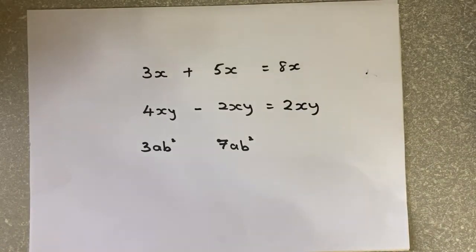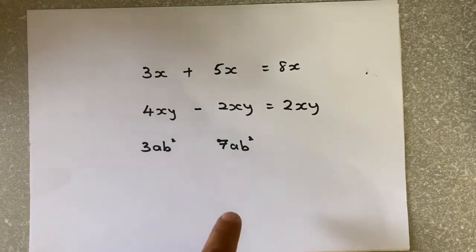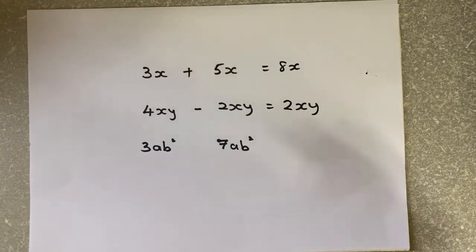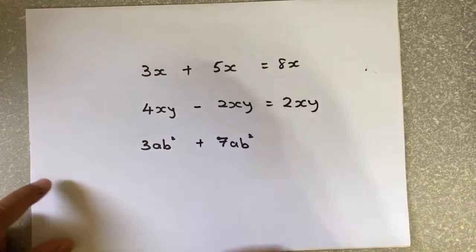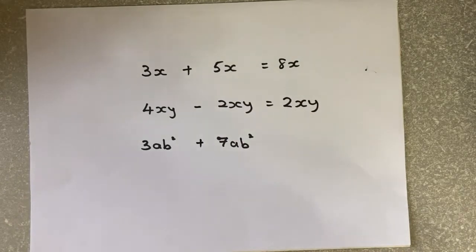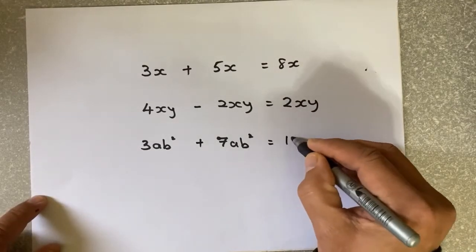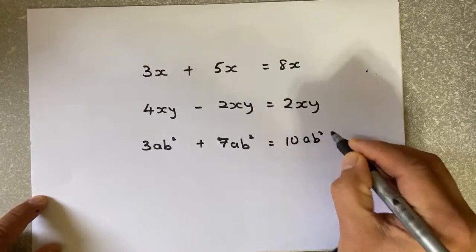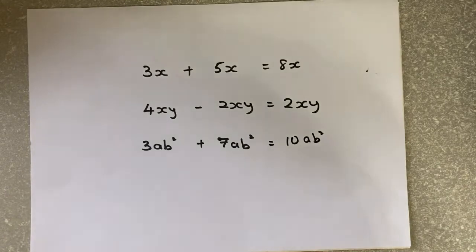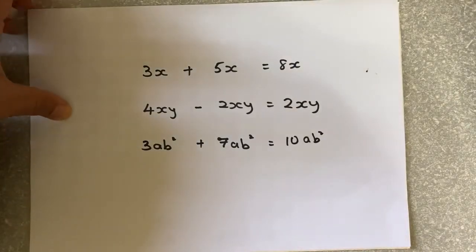Similarly, if I have AB squared and AB squared, they're the same family. If I add them up: 3AB squared - 3 of one family plus 7 of the same family - you get 10AB squared. Remember, you can only add and subtract when they have the same letters or combination of letters. They are called like terms.